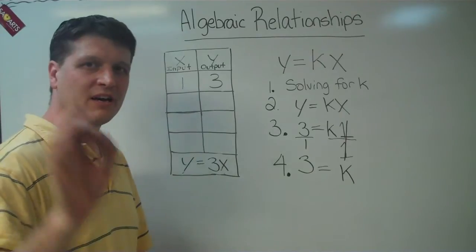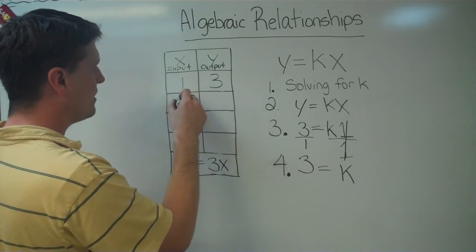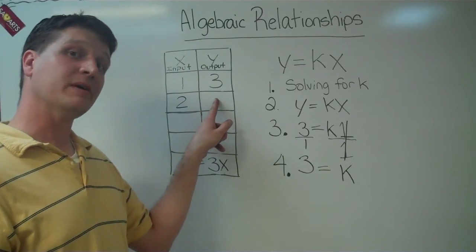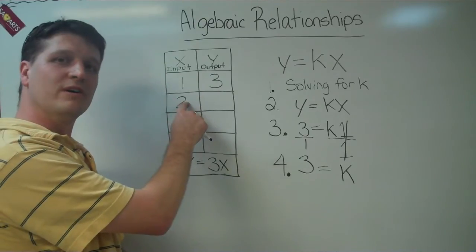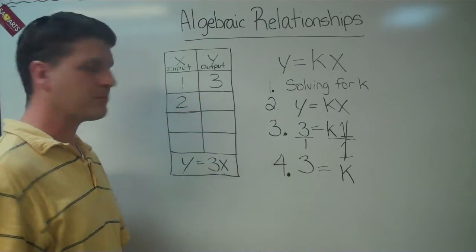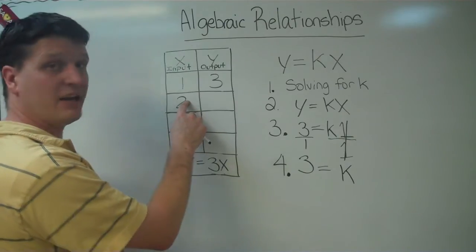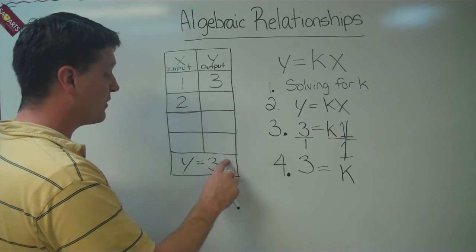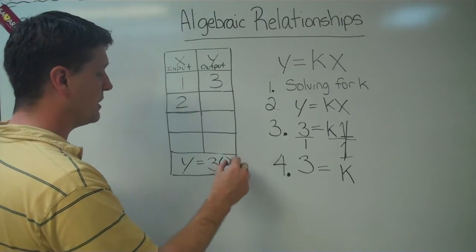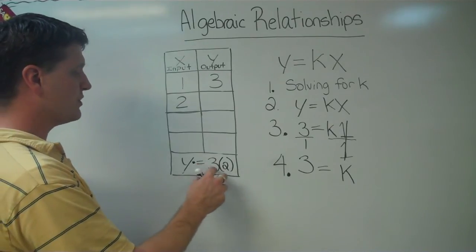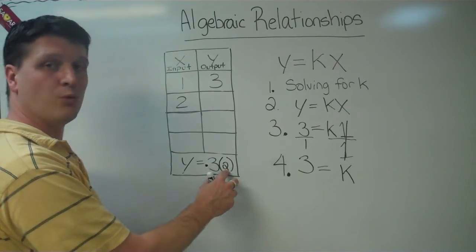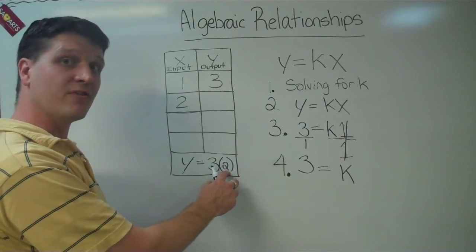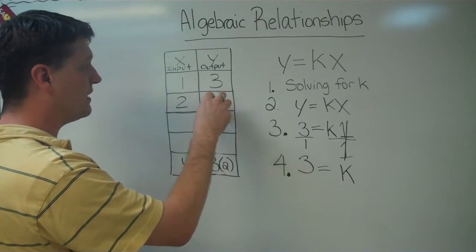What we're going to do is we're going to plug in a number. Let's just say we want to find what our y output is going to be if we input a 2 for x. So let's go ahead and try that. We're going to take our 2, our input, and we're going to input it into the equation. And instead of x, we're going to put 2. So y equals 3 times 2. 3 times 2 is 6. So our y value, if we substitute a 2 for x, our y value is going to be 6.